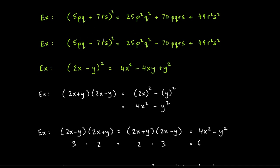Here's a fresh example from scratch: (2x − y)². The recipe: square the first term — 2 times 2 is 4, x times x is x², giving 4x². The middle sign is negative, so minus. Multiply the two terms: 2x times y = 2xy, double it to get 4xy. Then square the last term: y². Answer: 4x² − 4xy + y².